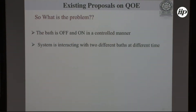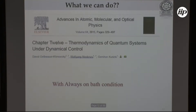The problem is implementing a proper quantum adiabatic process, because adiabatic requires no heat exchange with the environment. However, in a practical scenario, we cannot switch off the system's interaction with the thermal bath — the thermal environment is always present. We cannot switch it off according to our needs. Our proposal is to implement a quantum heat engine under an always-on bath condition, where we never switch off the system interaction with the thermal bath, yet still implement the quantum heat engine.